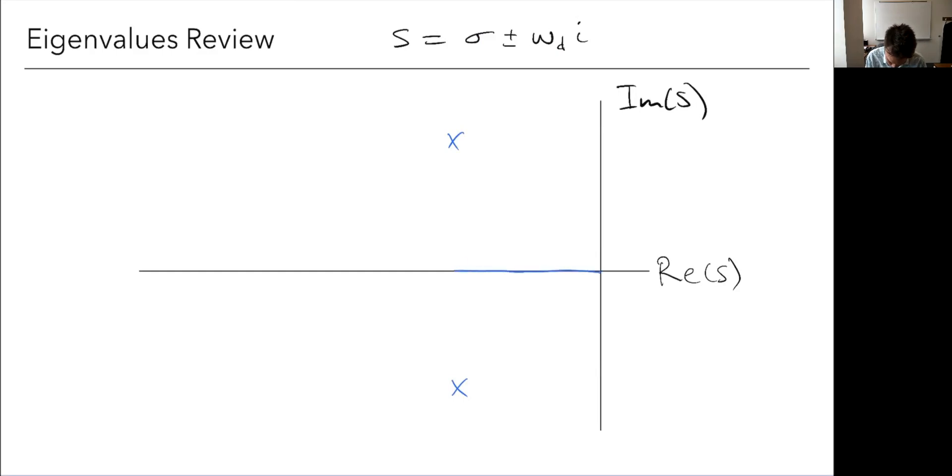This distance here is sigma, and this is omega_d. This distance is often called the natural frequency or the undamped natural frequency, omega_n. And then this angle here is related to the damping ratio zeta. We're not going to get worried too much about the nomenclature here. But what we do want to review is to ask you a few questions.